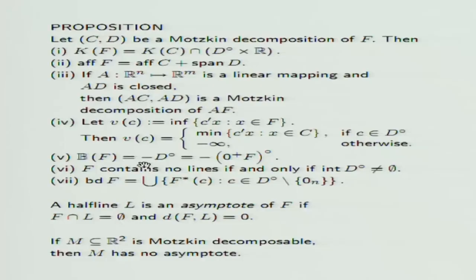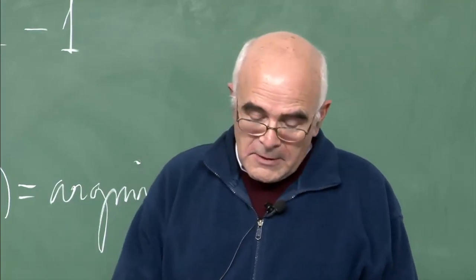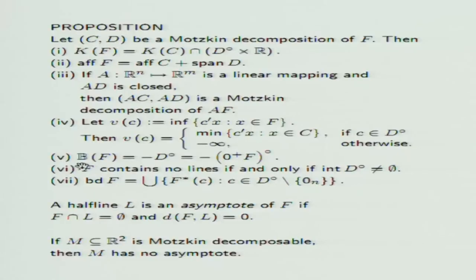The fifth property is interesting because it tells us that the barrier cone is closed, which is not always the case in general. Sets with a closed barrier cone have already been studied and are called hyperbolic convex sets. This shows that every Motzkin decomposable set is a hyperbolic convex set.